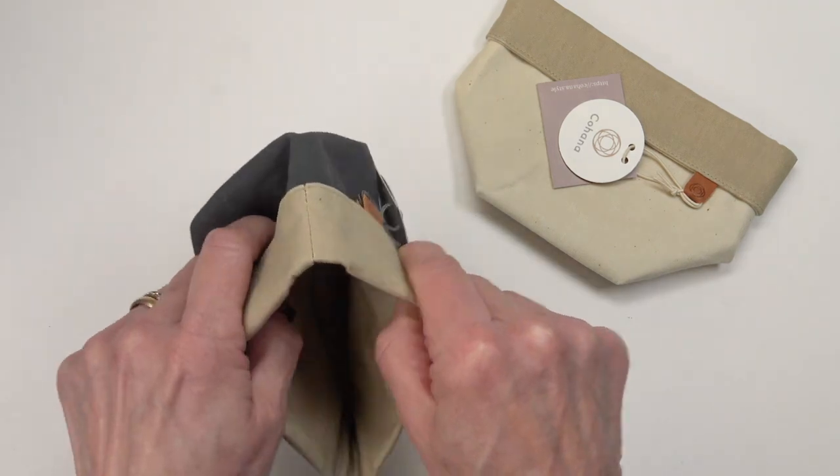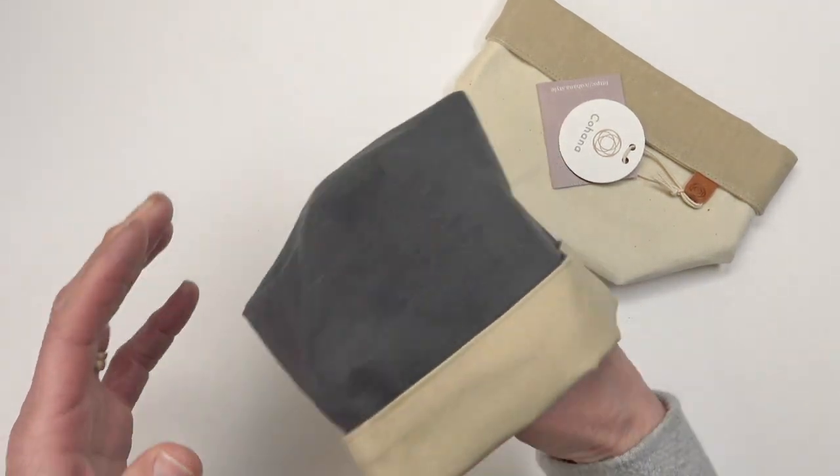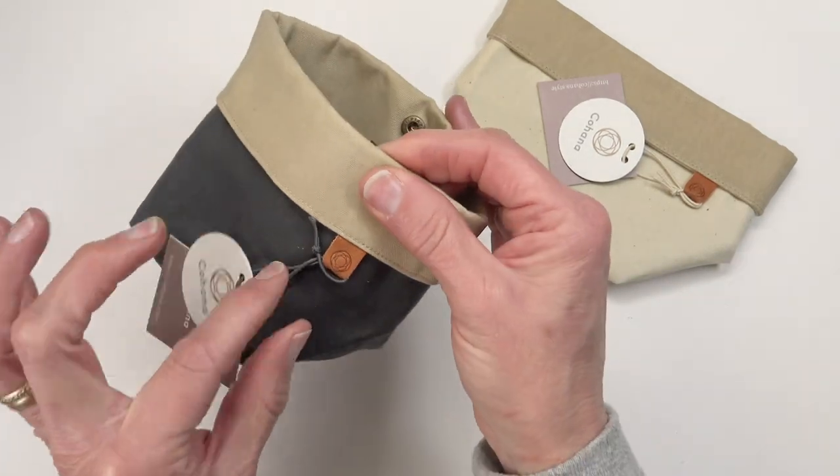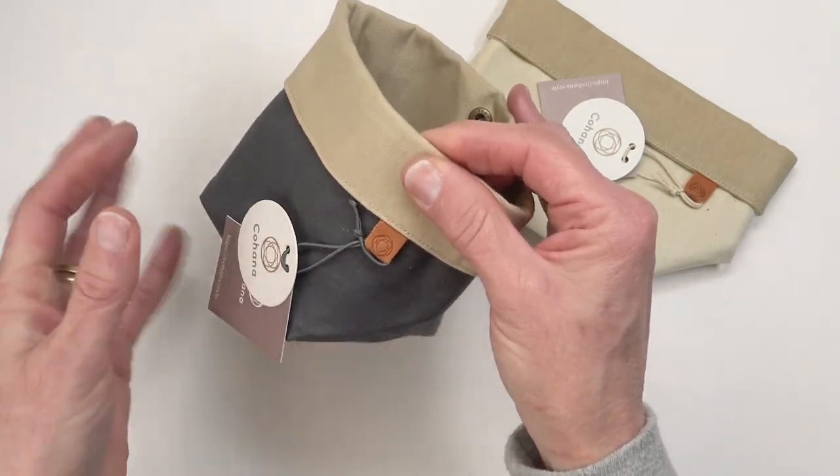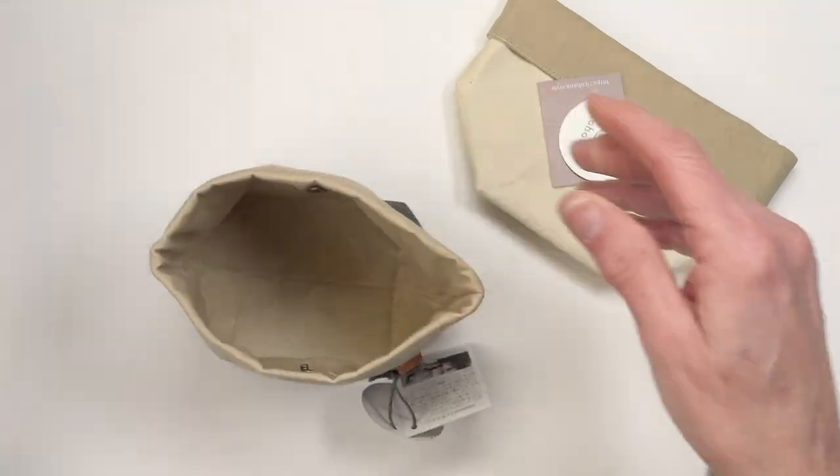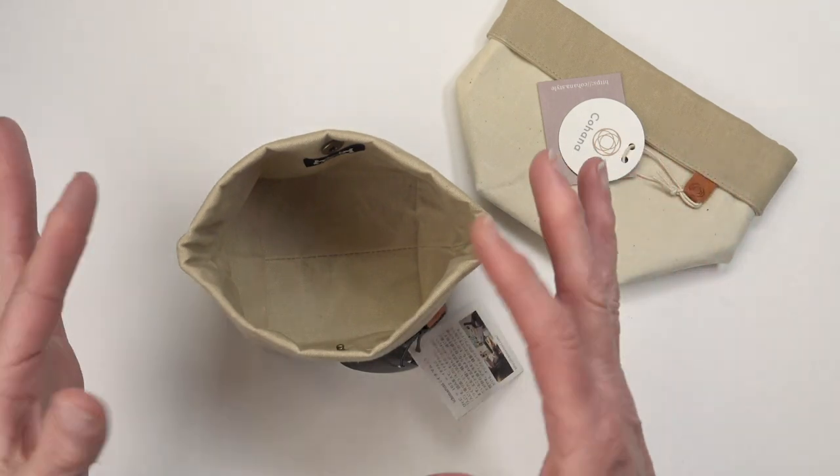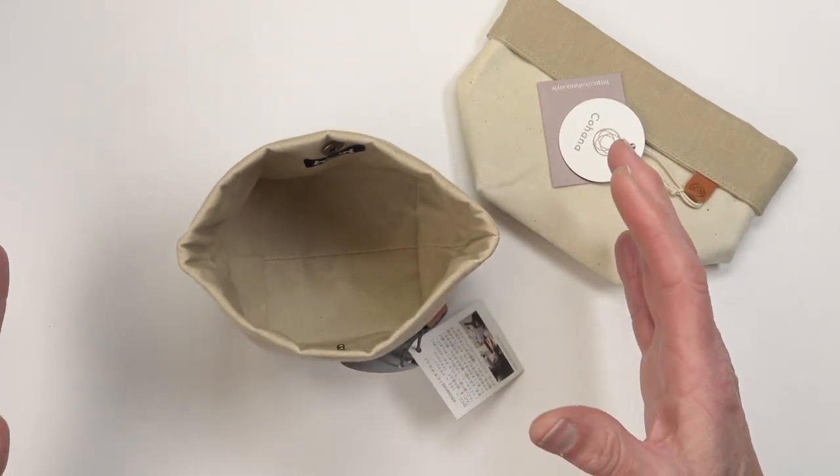They're made out of a waxed canvas and they're lined. They're two layers thick. It's got this cute little thing here that you can hang other things off of if you wanted to. It opens up and sits flat and they do limber up with time as you use them.